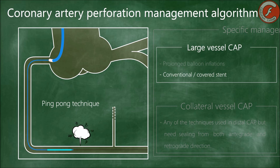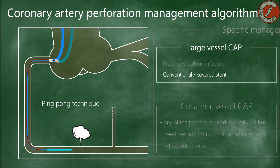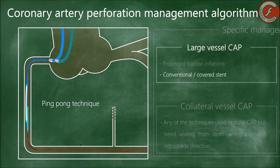The ping-pong technique, or double guide catheter, is most recommended when working with 6 or 7 French catheters. This technique involves introducing a second guide catheter through another vascular axis and then using this second catheter to advance an angioplasty guide wire and subsequently a covered stent through the perforated coronary artery. This allows the blocking balloon to be kept inflated until the covered stent is ready to be implanted.